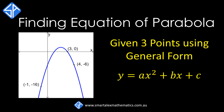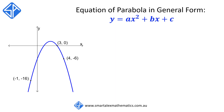In this video, we're going to look at another example on how to find the equation of parabolas given any three points. When we're given any three random points on the parabola, which isn't a turning point or the x-intercepts, a good way to find the equation is using the general form y is equal to ax squared plus bx plus c.